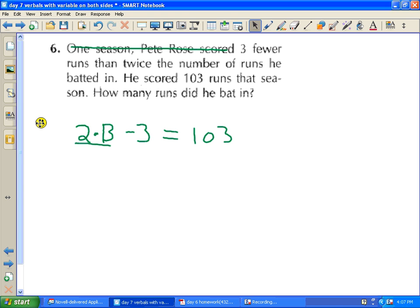Implied means you've got to read through the lines, read between the lines. How many runs did he bat in? Draw the big line and start solving. Are there any terms to combine here on the left-hand side? No. How do I know? Because all the B's are in one location.